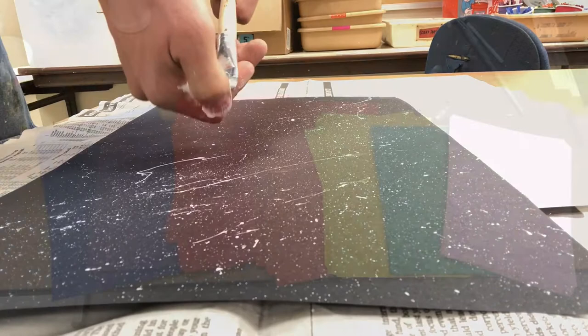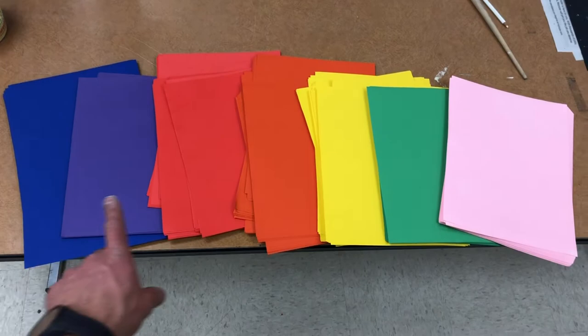Next, choose a couple pieces of paper to use for your planets for your space drawing. You're going to need two to three colored pieces of paper.